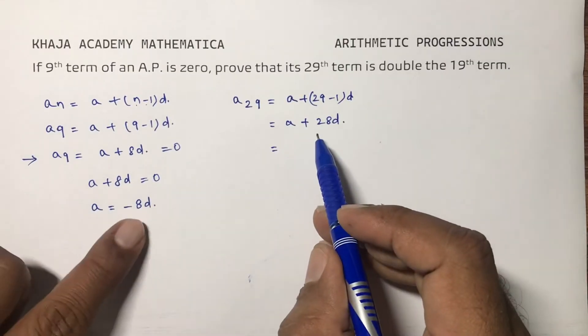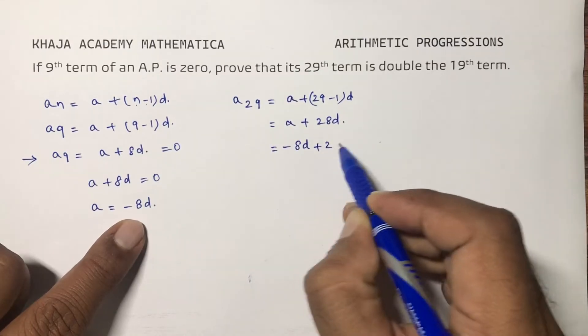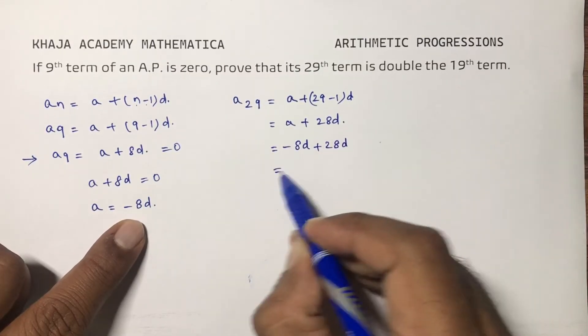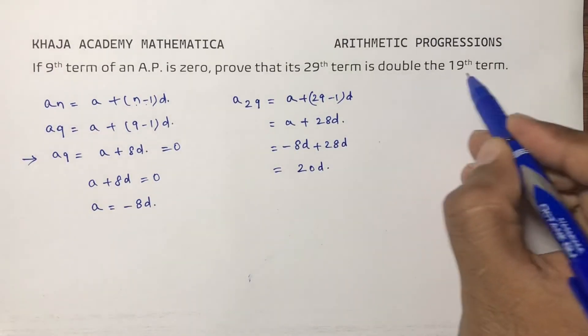Now if I substitute the value of A, -8D + 28D, which is equal to 20D. Now find 19th term.